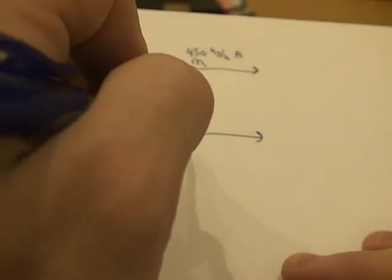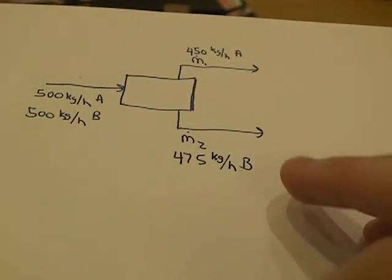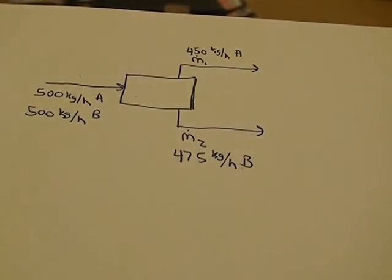Now, on the bottom, let's say we don't actually know how much A is coming out, but we do know that 475 kilograms per hour of B is coming out of the bottom part of this process output.